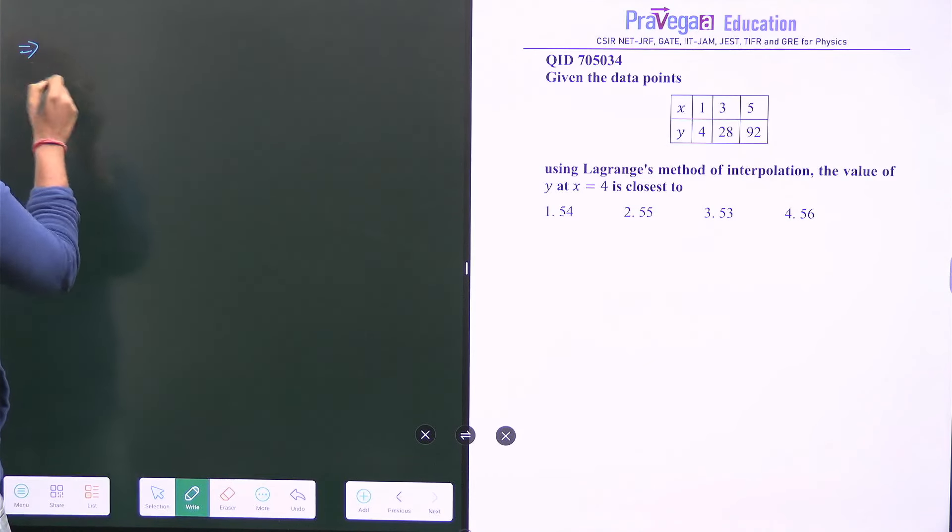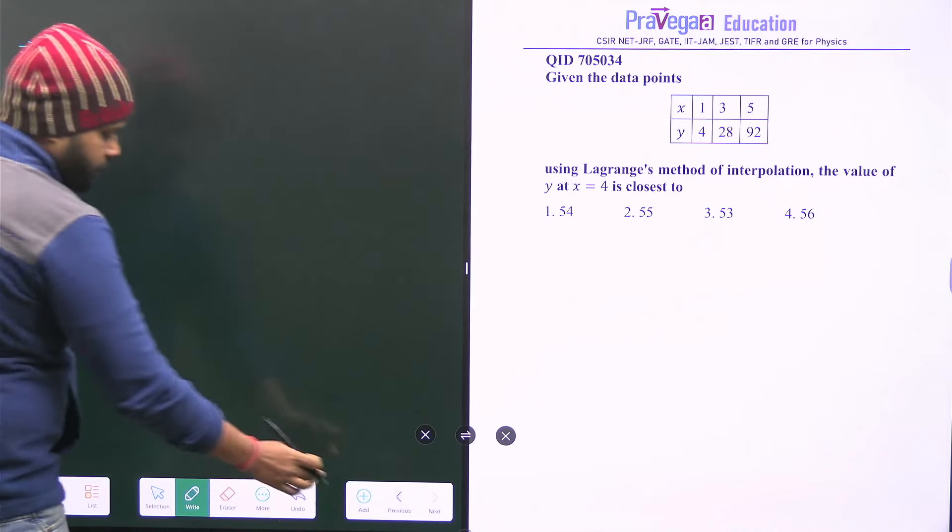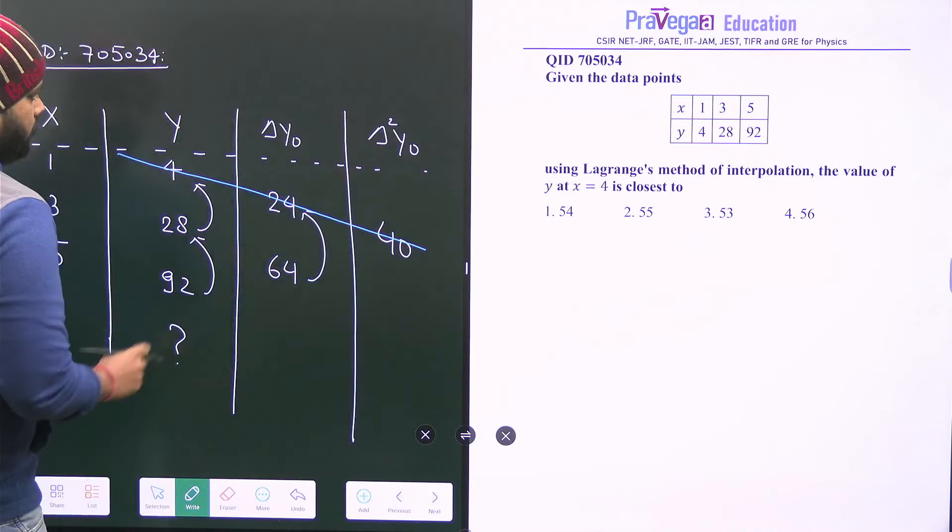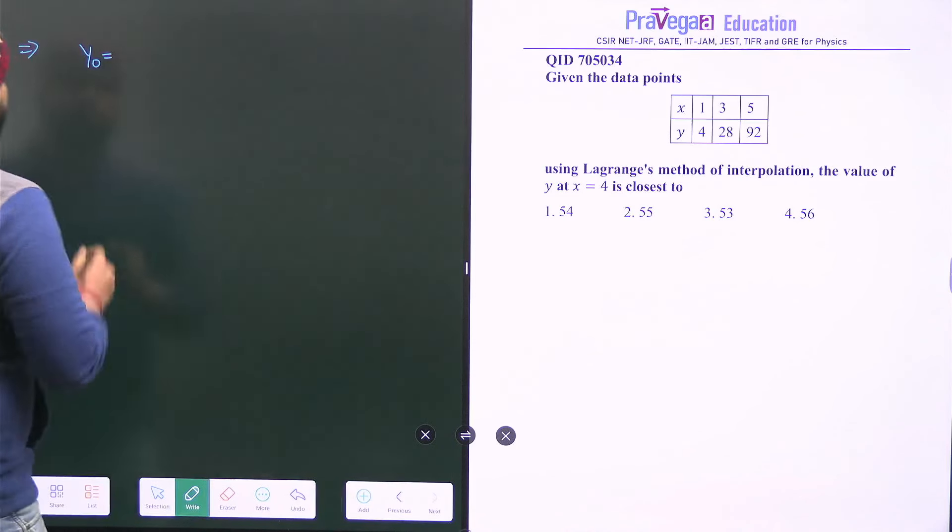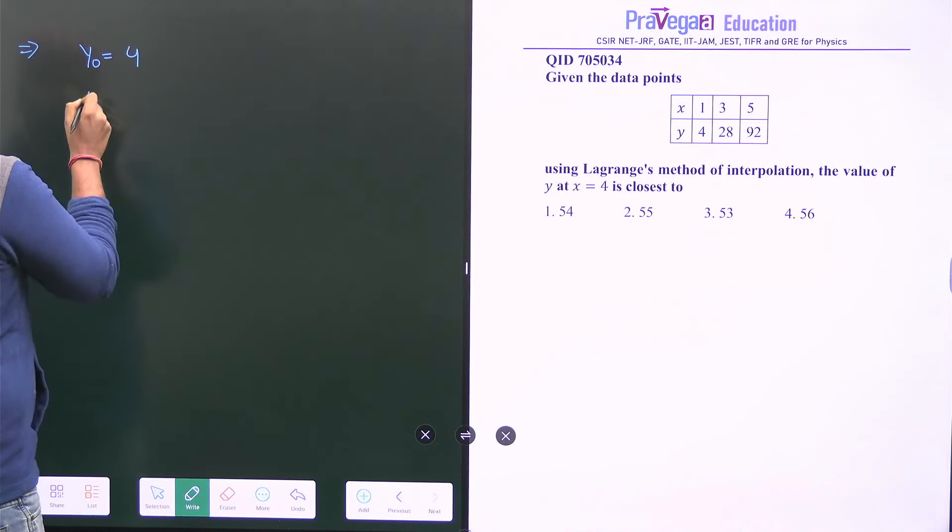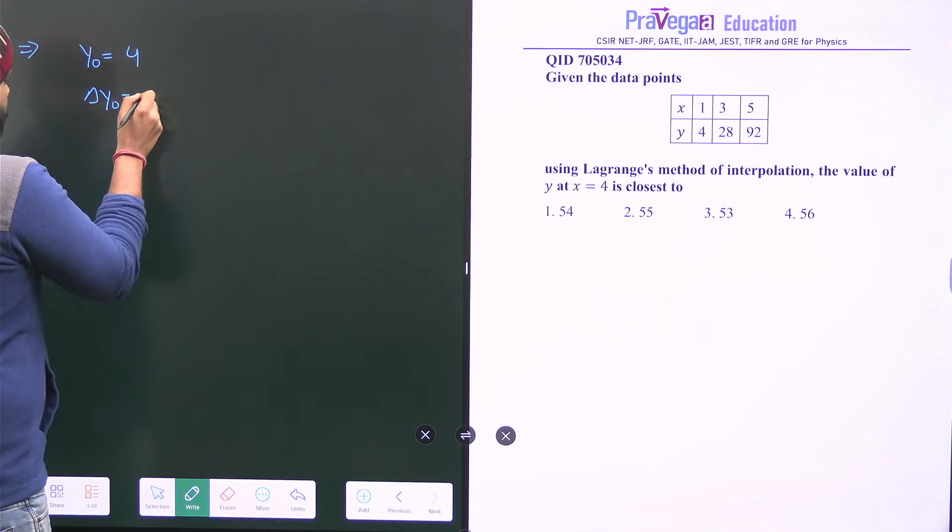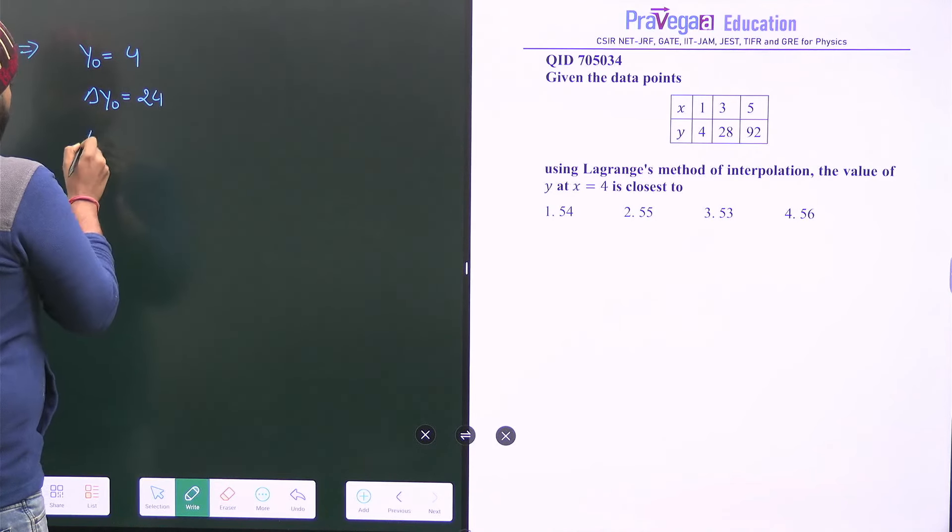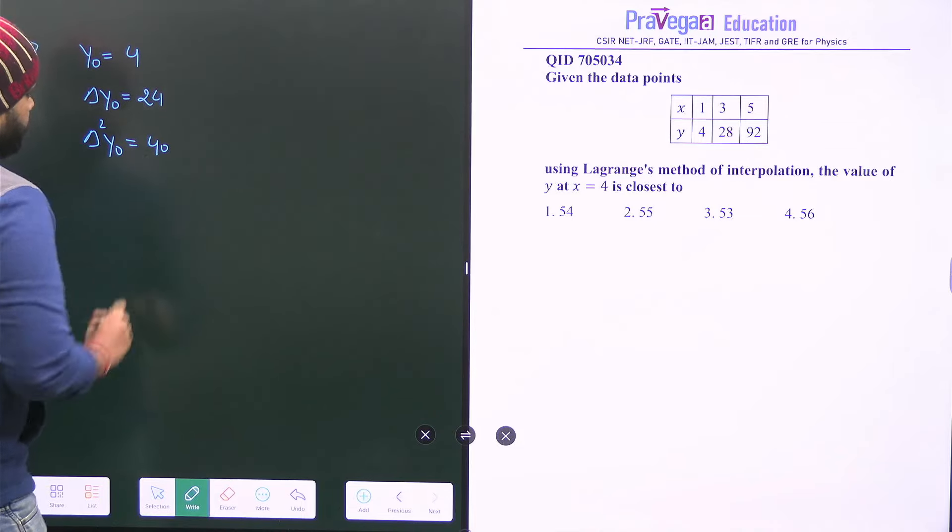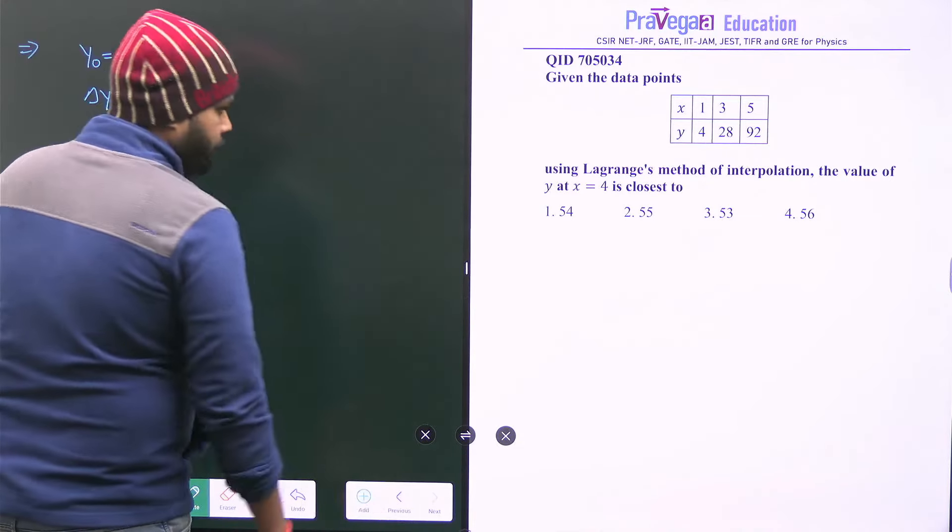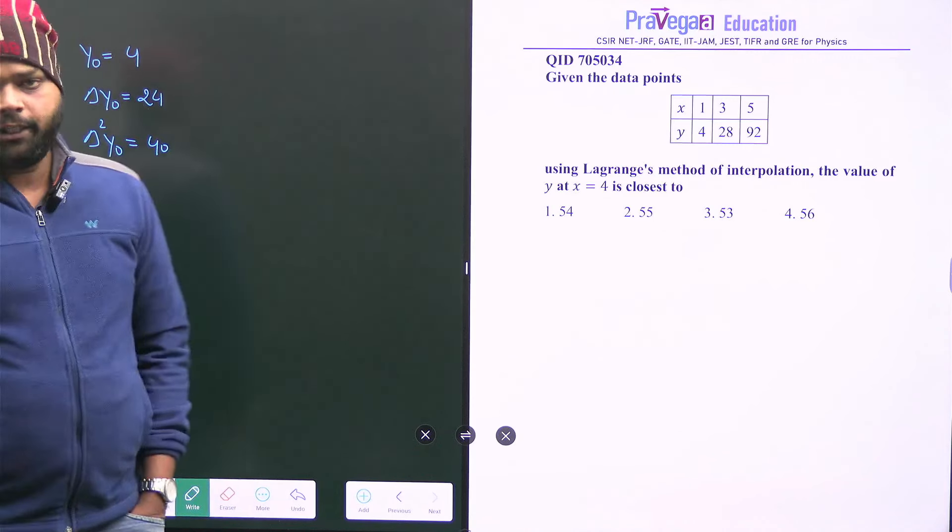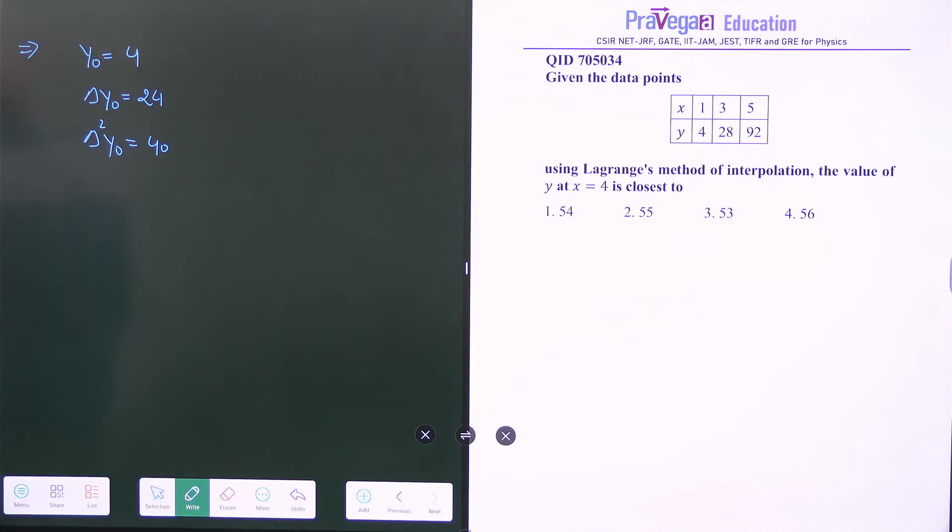So the values, that is y0, y0 value will be how much? Y0 value is 4, delta y0 is 24, and square is 40. Is it? 4, 24, and 40. So this is done.